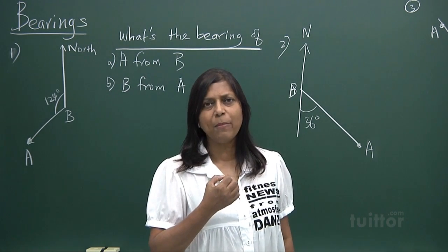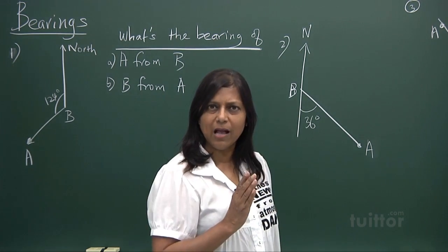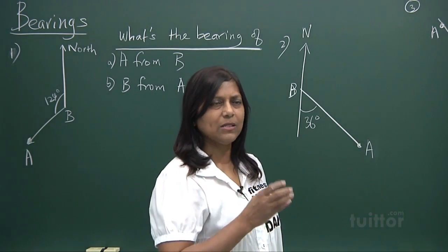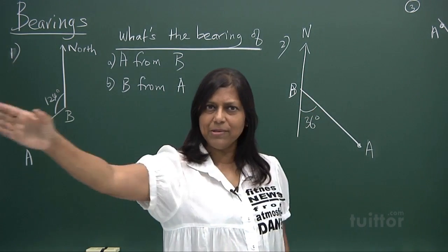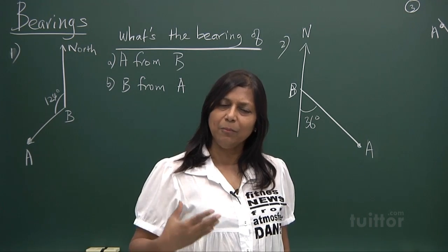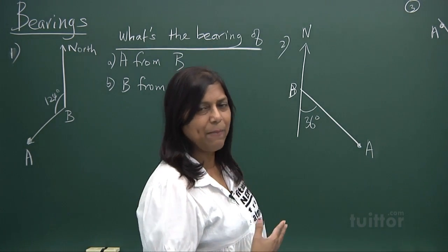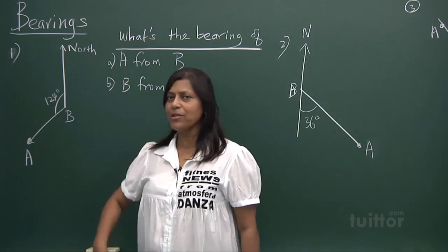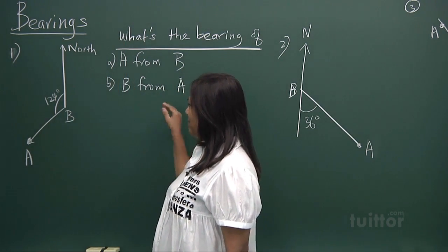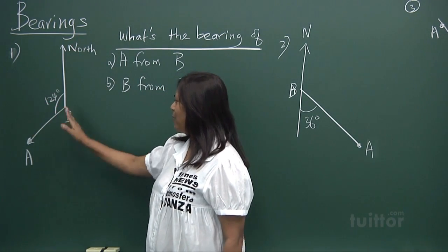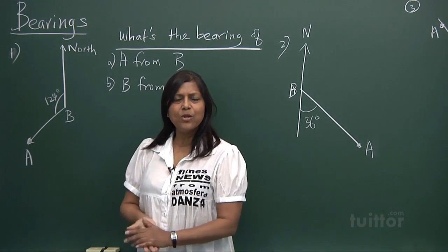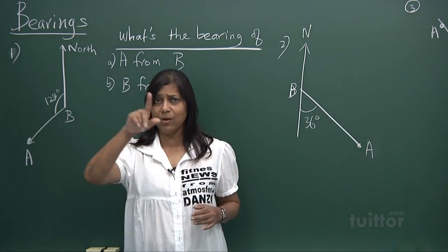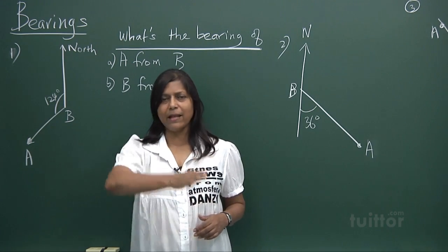When you want to talk about direction, you need to locate yourself. A compass tells us where north, south, east, and west are. When talking about bearings, you always relate to north. The maximum circle you can go around is 360 degrees — you go all the way around and come back to north again.